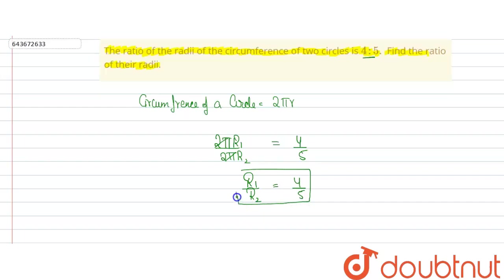So the ratio of radii of two circles is r1 ratio r2 is equal to 4 ratio 5, which is our answer.